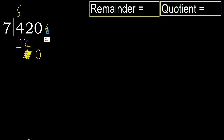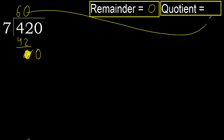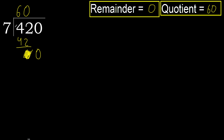There is no more number, therefore finish it — complete. Always complete with 0, because here we finish with this number. 420 divided by 7 is 60.